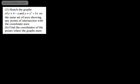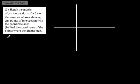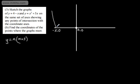Let's look at question number 3. We're asked to sketch the graphs of y equals 4 minus x and y equals x squared plus 5x on the same axes, showing any points of intersection with the coordinate axes. Starting with the quadratic, we can factor: x is common, so y equals x times (x plus 5). When y equals 0, x equals 0 or x equals negative 5, so it passes through the origin and (negative 5, 0).